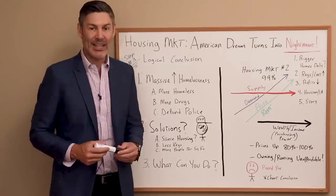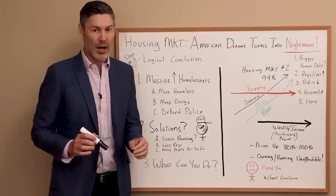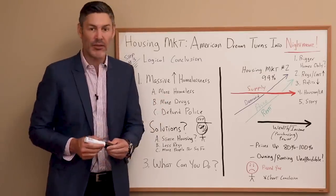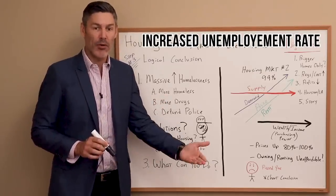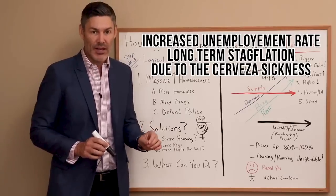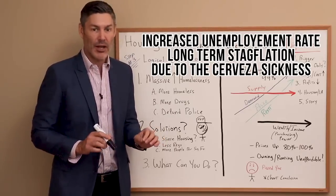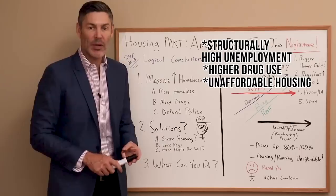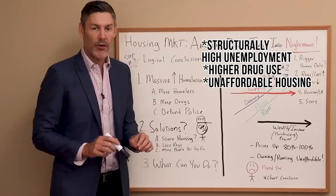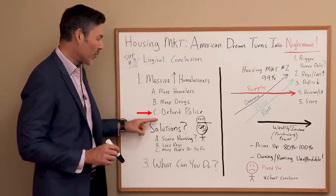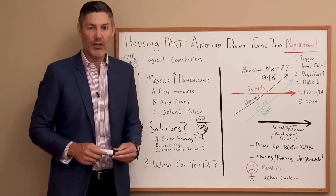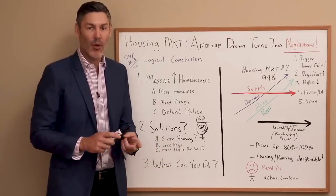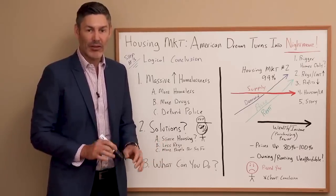Unfortunately, I don't think it ends with just an increase in the homeless rate. We have drugs being legalized, and the bottom line is you put more drugs out there, you're going to have more people using them — especially with an increase in homelessness and an increased unemployment rate, and long-term stagflation from the economic situation we're in. So we have structurally high unemployment long-term, most likely higher drug use, and housing becoming more and more unaffordable. We've also got the societal push toward defunding the police. Higher unemployment, more homeless, more drugs, and less police — that equals Gotham City. You're going to have a massive increase in crime, unfortunately.